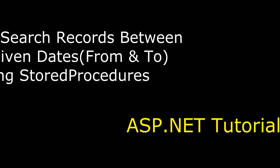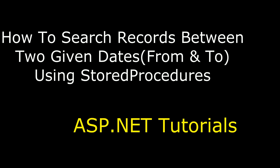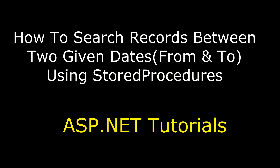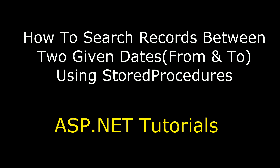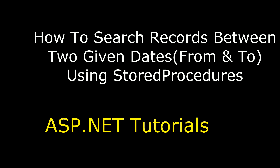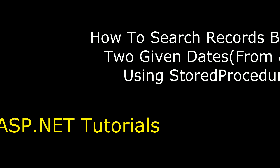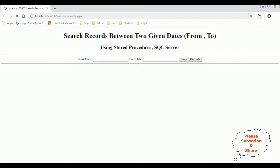Hello friends, welcome to my channel. This is Charan. In this video I will show you in ASP.NET, using stored procedures, how to search records between two given dates — a starting date and an ending date — and display records in a GridView control. Here we got the output of that code: search records between two given dates using stored procedures.